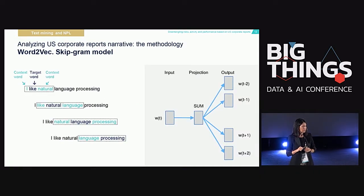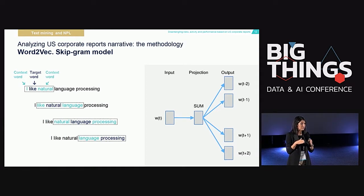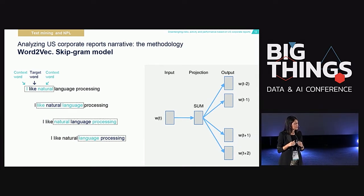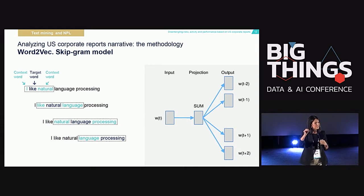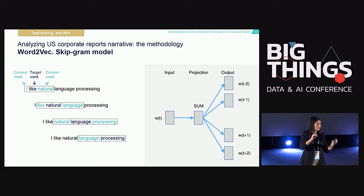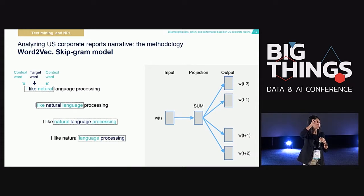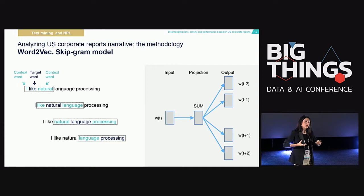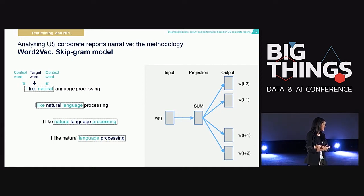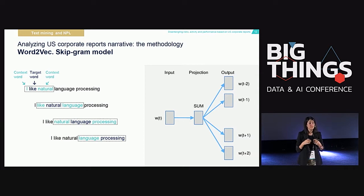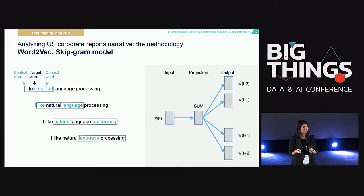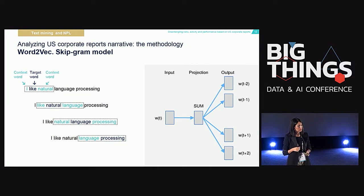For the Word2Vec methodology, it takes into account the context. Imagine you have a particular term of interest — this methodology will tell you all the words that appear in the same context as that term. So if you want to monitor a strategic set of indicators, you can say you're interested in 'uncertainty,' for example, and it will give you all the words that appear in the same context as uncertainty. It maps every word and constructs a huge network for each word, taking into account the other words that appear together with it.